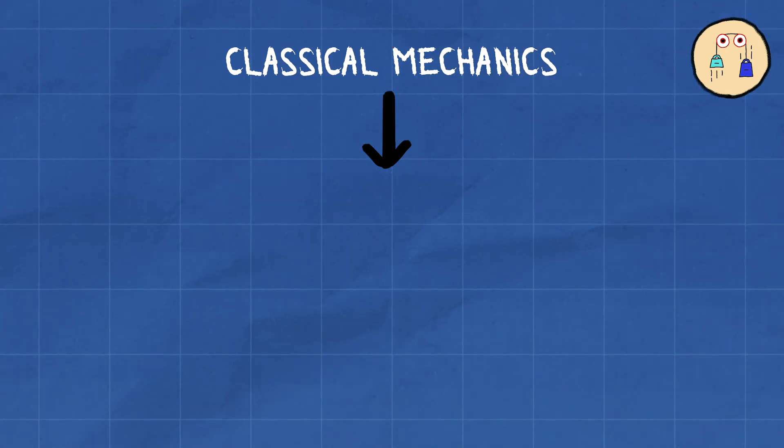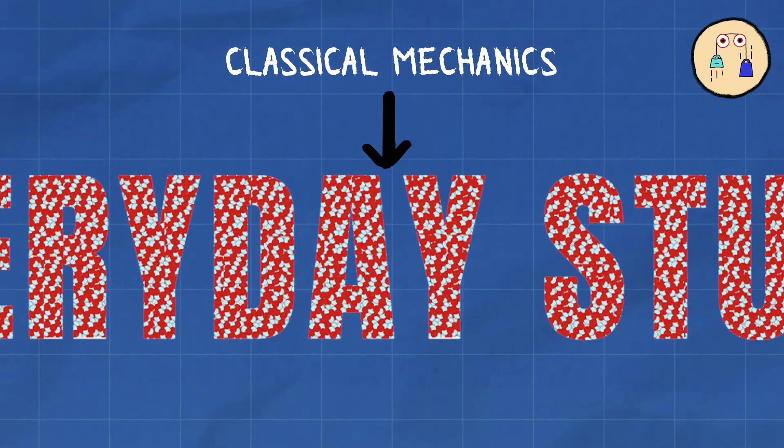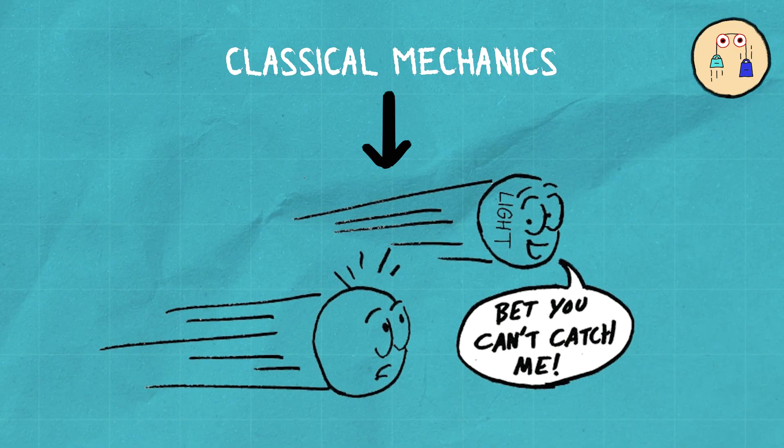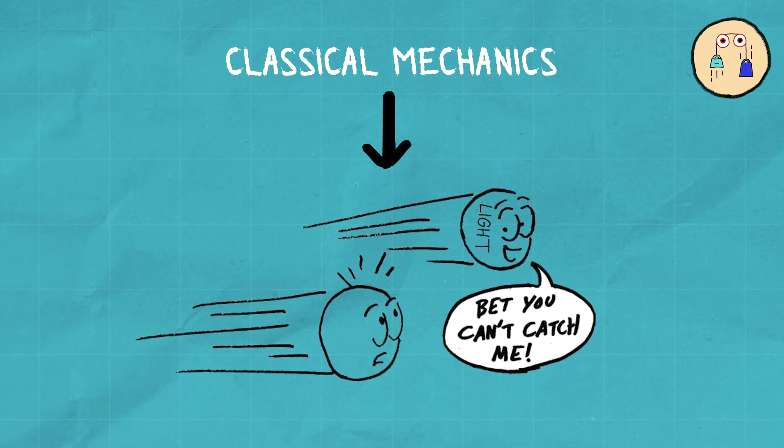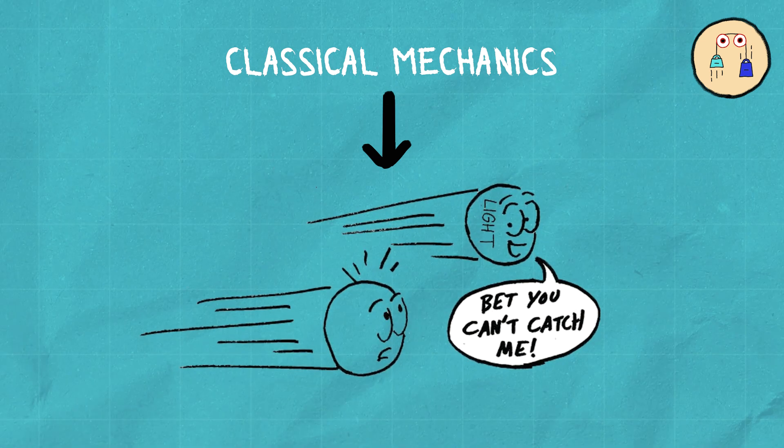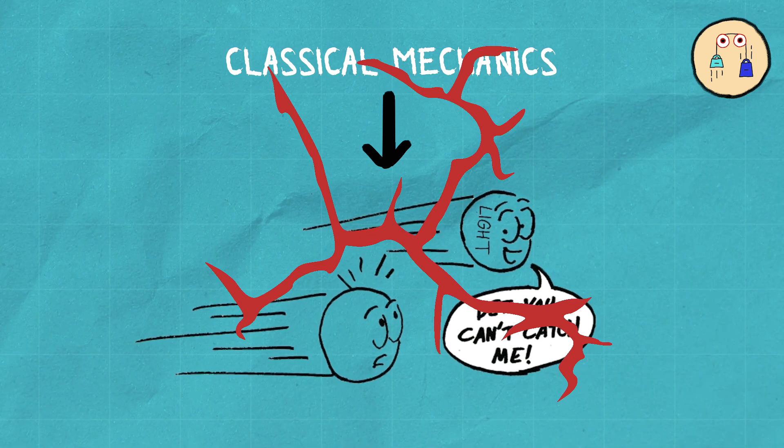Now, Classical Mechanics is fantastic for everyday stuff. But when we zoom in on the super tiny world of atoms, or zoom out to explore objects moving at crazy speeds, where we're talking close to the speed of light, Classical Mechanics starts to show some cracks.